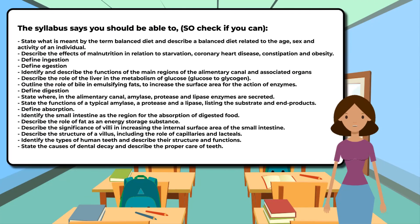The syllabus says you should be able to — so check if you can: state what is meant by the term balanced diet and describe a balanced diet related to the age, sex, and activity of an individual; describe the effects of malnutrition in relation to starvation, coronary heart disease, constipation, and obesity; define ingestion; define digestion; identify and describe the functions of the main regions of the alimentary canal and associated organs; describe the role of the liver in the metabolism of glucose; and outline the role of bile in emulsifying fats to increase the surface area for the action of enzymes.